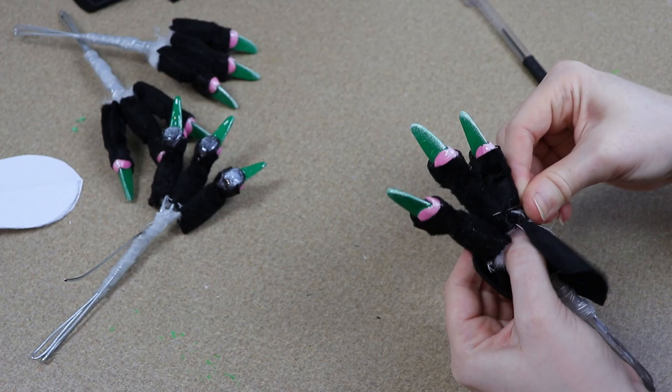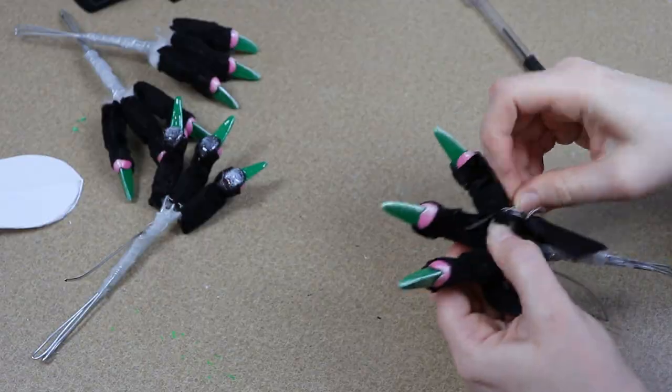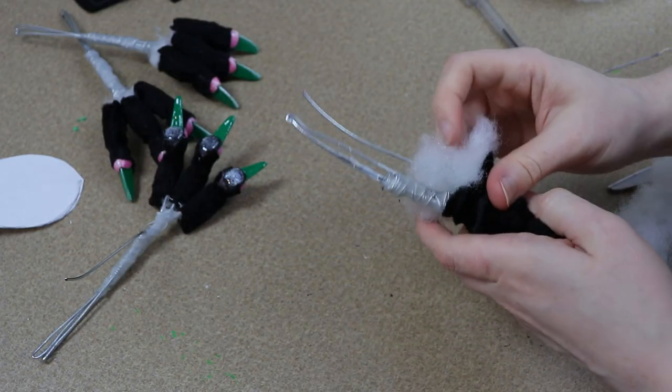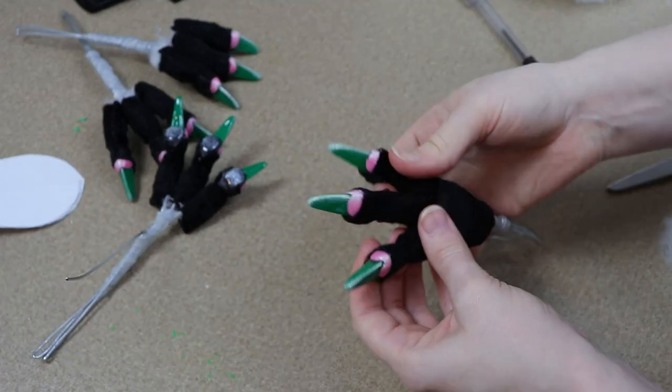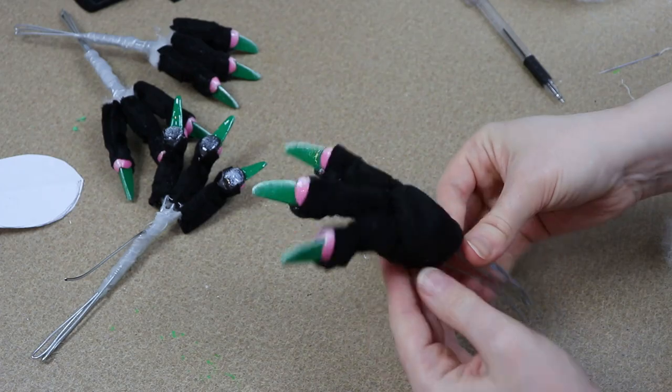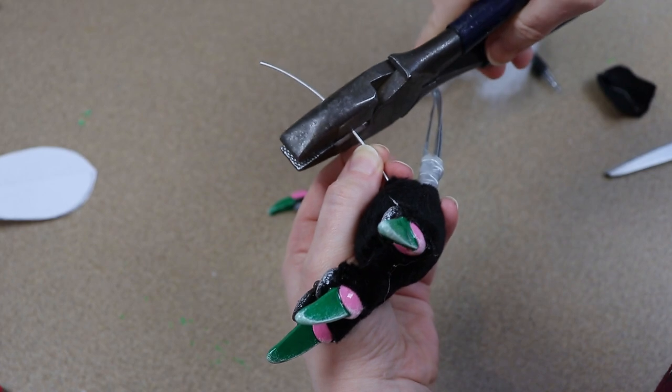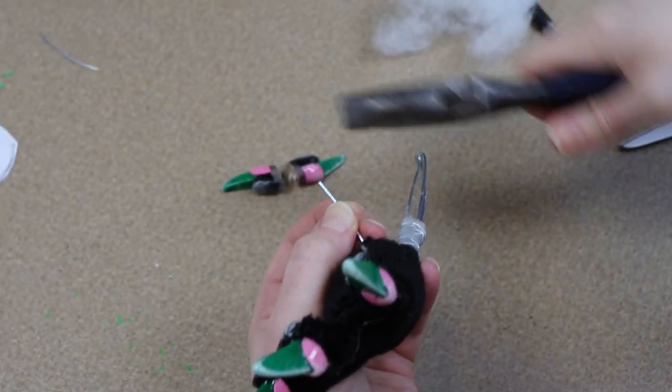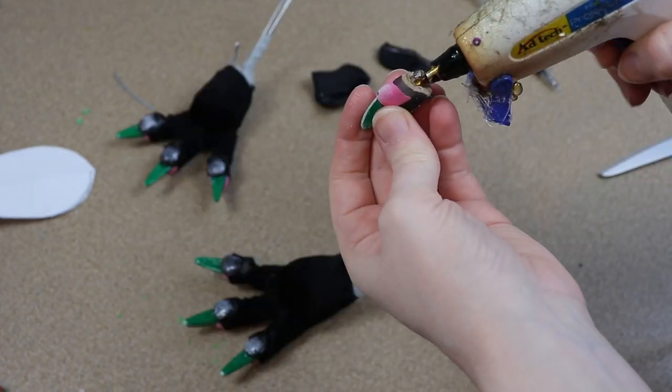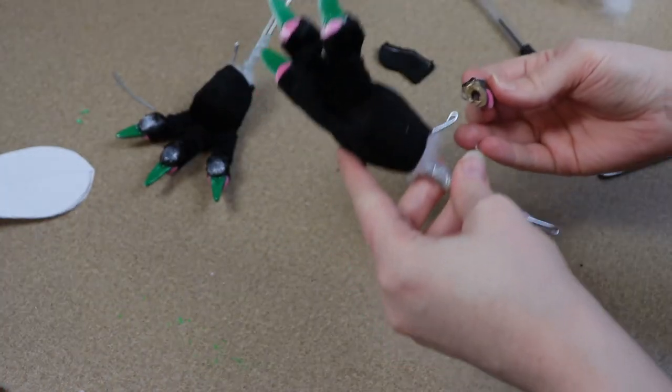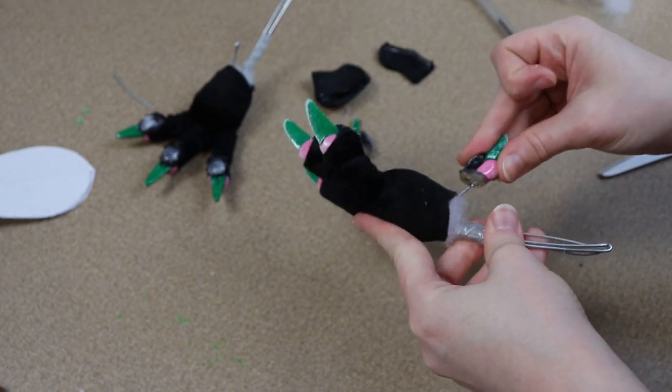But my front feet are going to have dewclaws. So what we're going to do is we're going to add that claw. Now I always leave my wires a little bit longer when I'm not 100% sure on how long I need them. So I'm going to adjust the length of the wire for our dewclaw. And then once I know that it's the length that I need, I'm then going to take our claw, glue it in place, and then I'm going to take the fabric for the claw and glue it around the base of that.